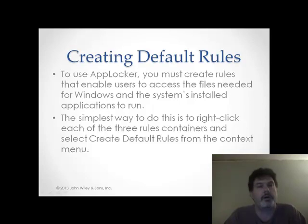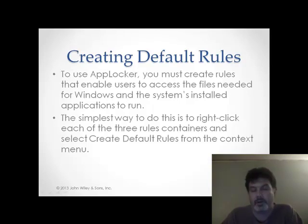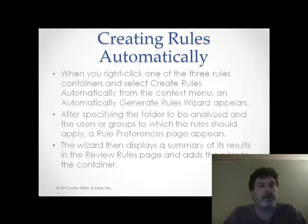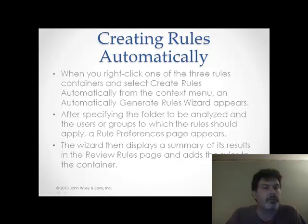Now, if you're going to use AppLocker, then you have to create some rules that are going to enable your users to access the files needed for all the Windows system files to run and all the installed applications to run. The best way to do this is simply to right-click on each of the three rules containers and select Create Default Rules from the context menu. Here we have created some default rules for executables, allowing Windows system installer rules, and so on. When you right-click one of these three rules containers and select Create Rules Automatically, the Automatically Generate Rules wizard will appear. After specifying the folder to be analyzed and the users and groups to which the rules should apply, a rule preference page is going to appear. The wizard will then display a summary of the results and let you make any changes prior to implementing those rules.